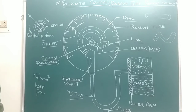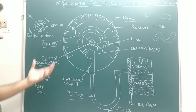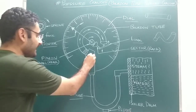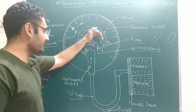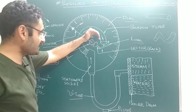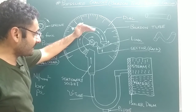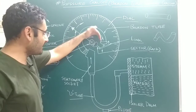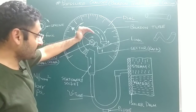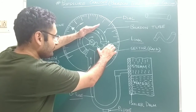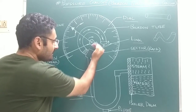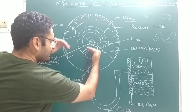Now for the working principle — how we measure the pressure of steam using this device. First, steam enters the U-tube, passes through the stationary socket, and enters the Bourdon tube. When steam enters the Bourdon tube, the pressure inside is high, so the Bourdon tube tries to stretch and become straight. As the Bourdon tube tries to straighten, it pulls the link upward, and the lower portion of the link moves downward, causing the rack to move in the downward direction.